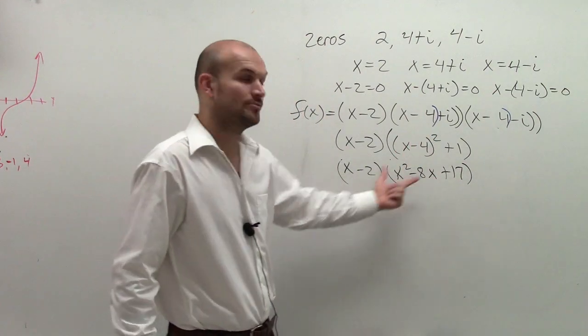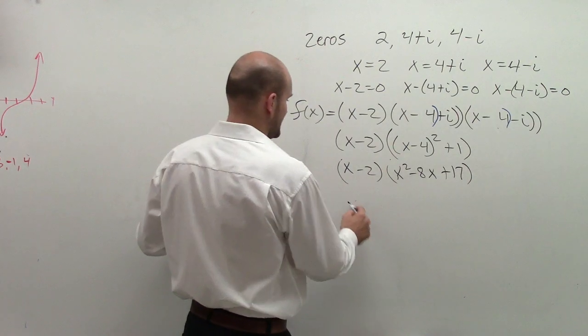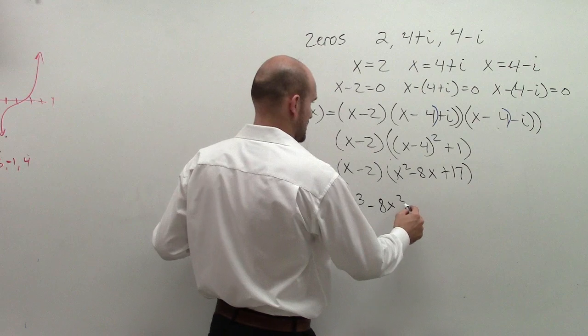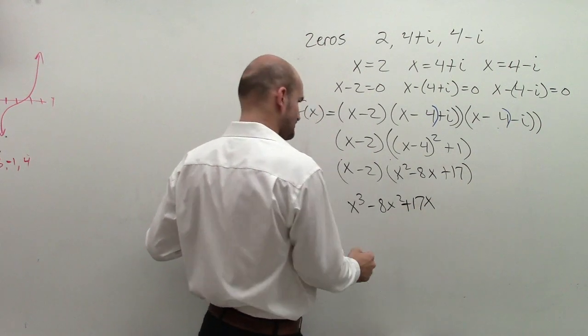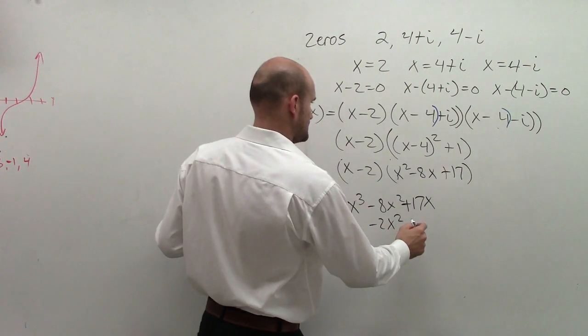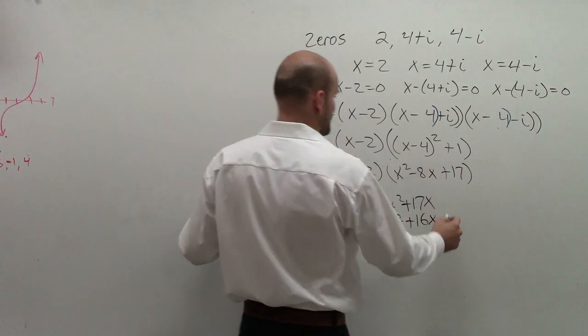Now I need to multiply a binomial times a trinomial. You could use a box. I'm going to use FOIL. What I get is x cubed minus 8x squared plus 17x minus 2x squared. Let's see, plus 16x minus 34.